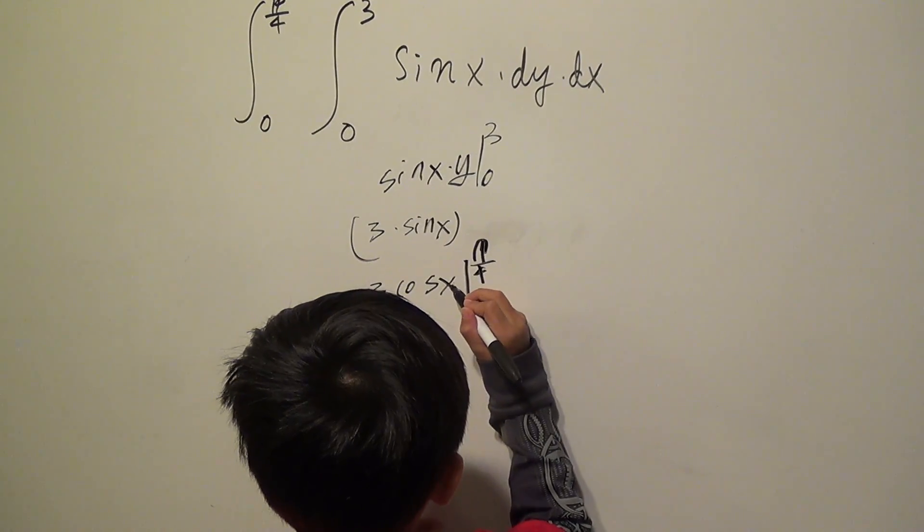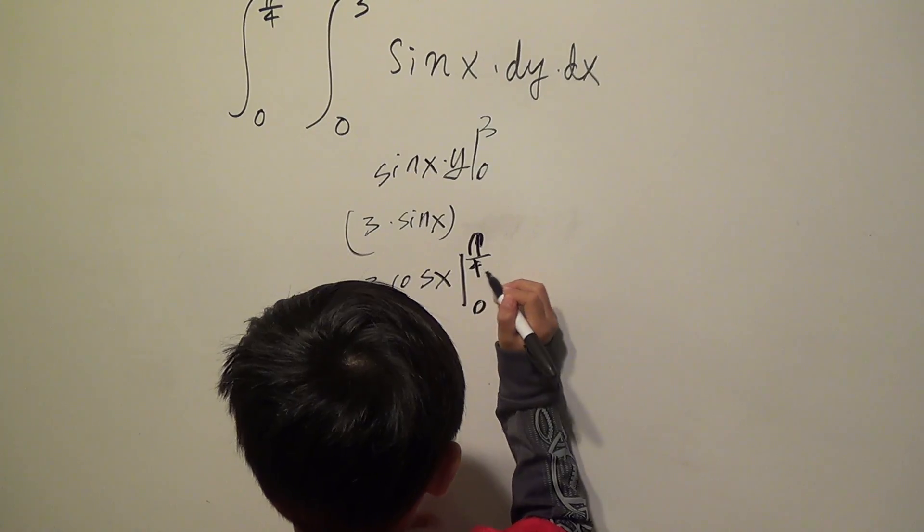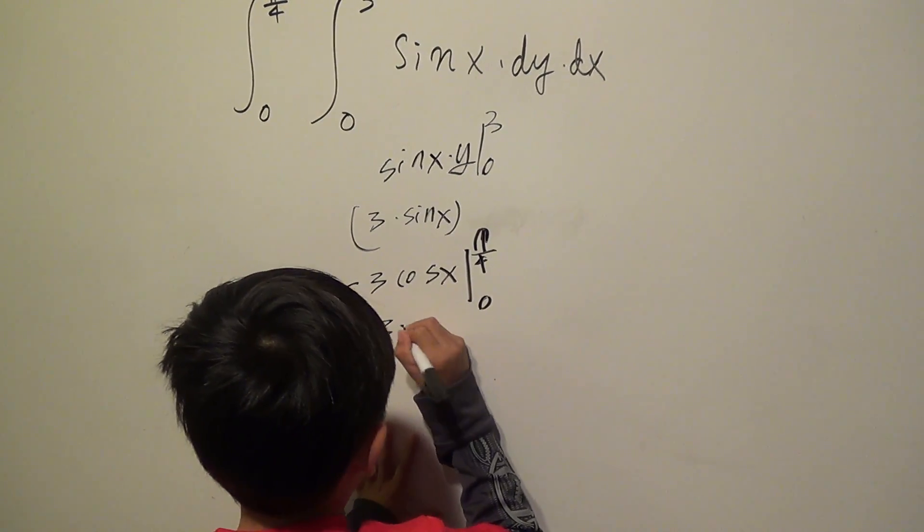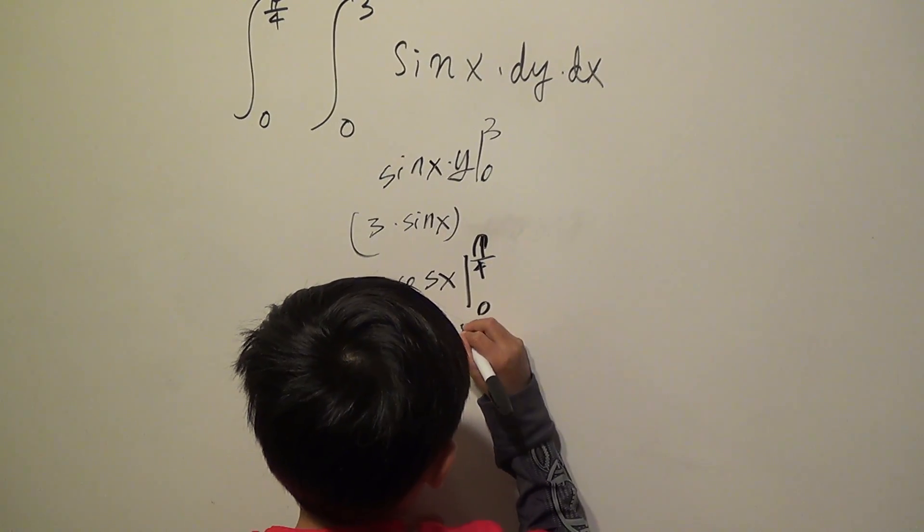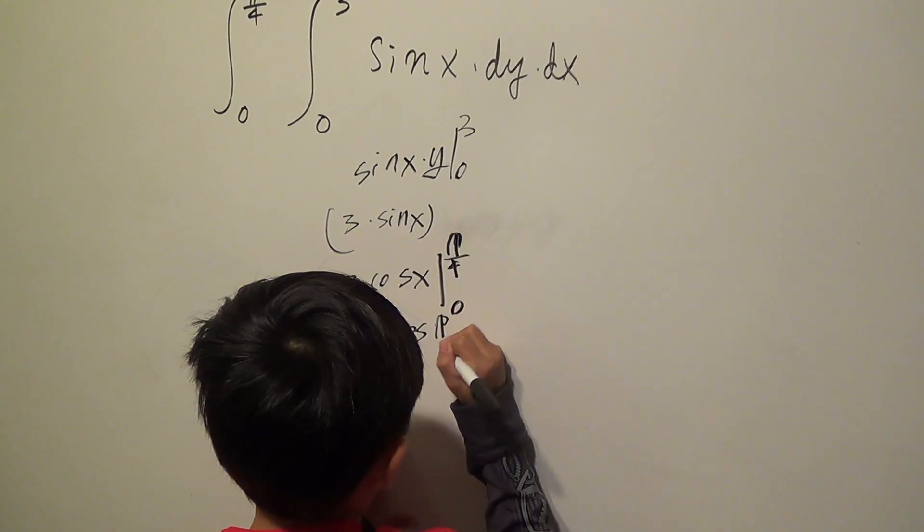So you change the x into π over 4. My next read of cos, π over 4.